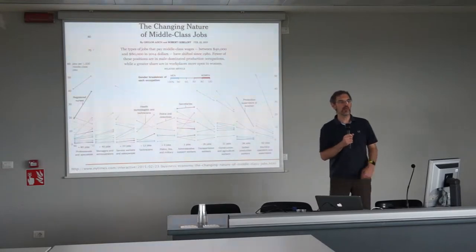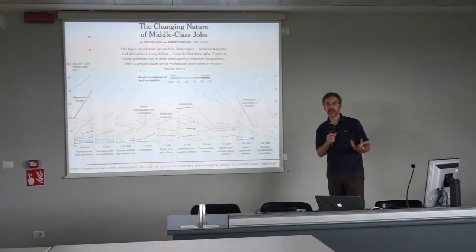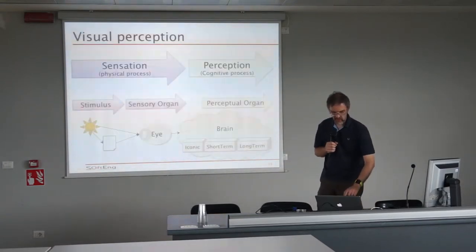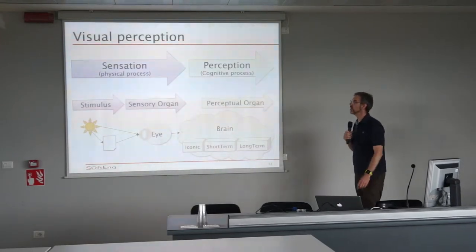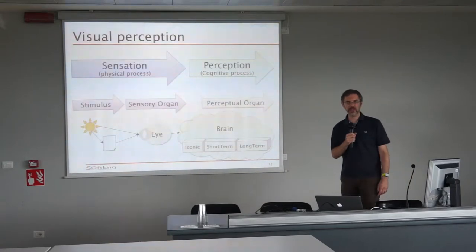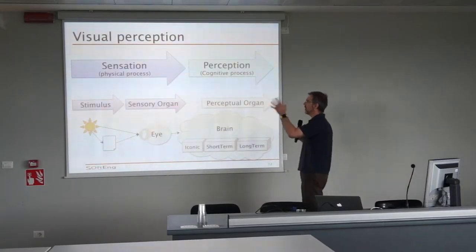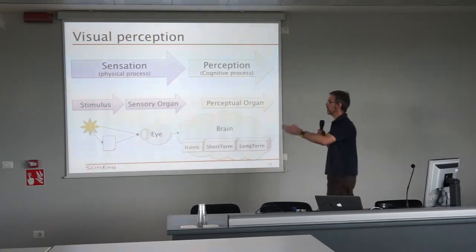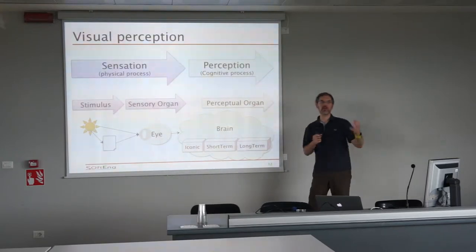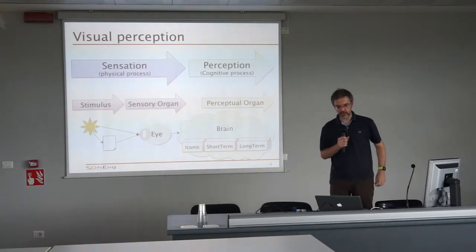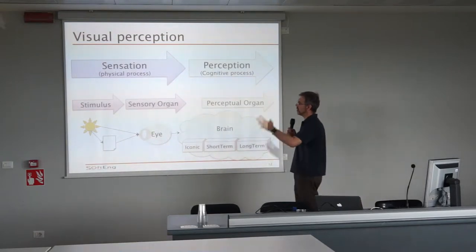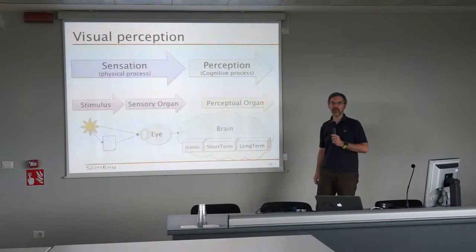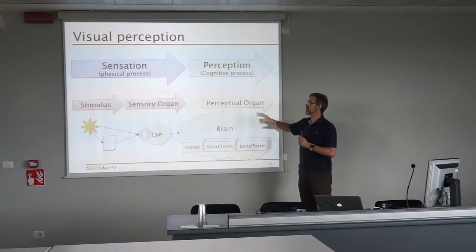What are the bases for showing your data in a correct and effective way? We have to start with visual perception. Whenever we talk about visual perception, we have two different phases: one is the physical part — the process — and the other is the perception, the more cognitive part. On the physical side, you have a stimulus — light — and a sensory organ, and the cognitive part takes place in our brain.